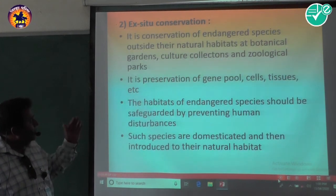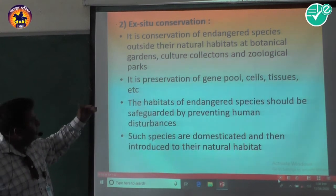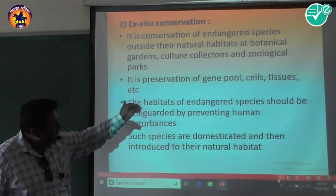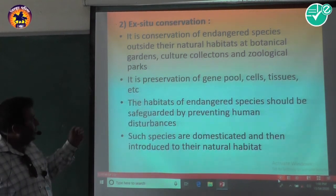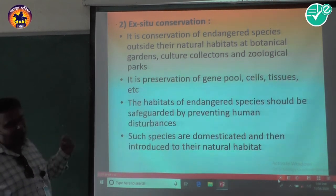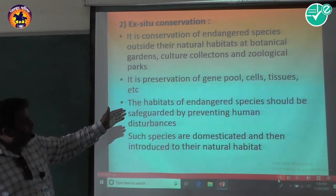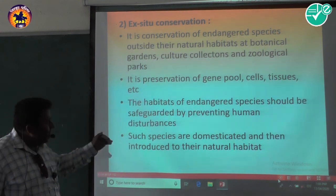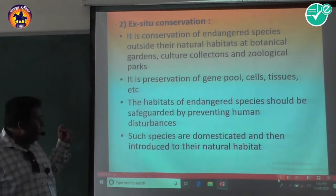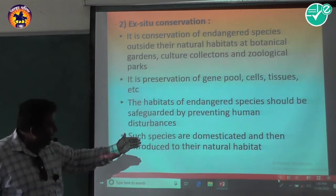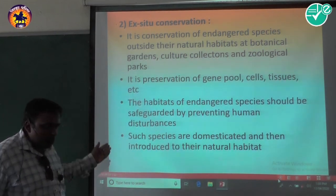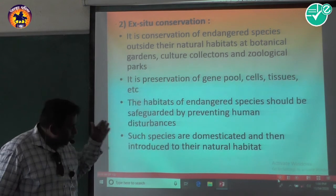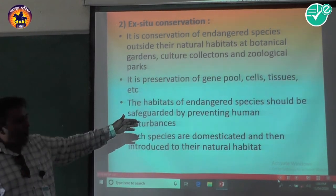Ex-situ conservation — method number two — is the conservation of endangered species outside their natural habitat, at botanical gardens, culture collections, and zoological parks. It is preservation of the gene pool, cells, and tissues. The habitats of endangered species should be safeguarded by preventing human disturbances. Such species are domesticated and then introduced back to their natural habitat.